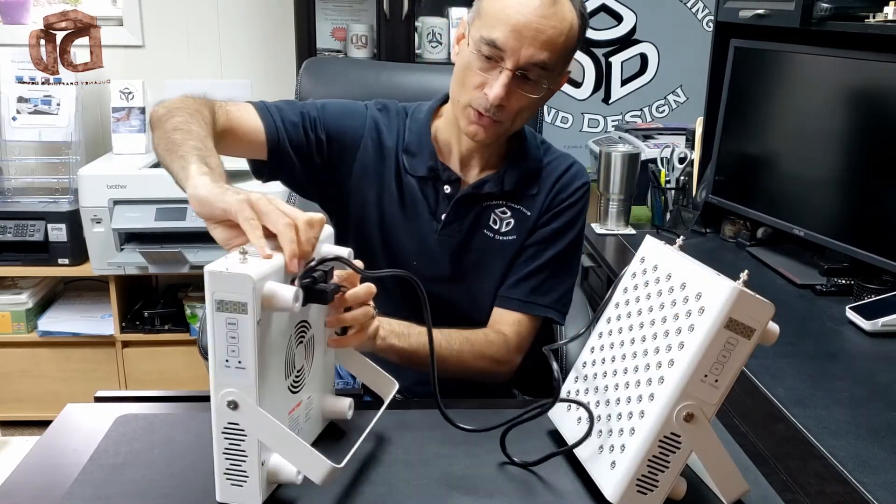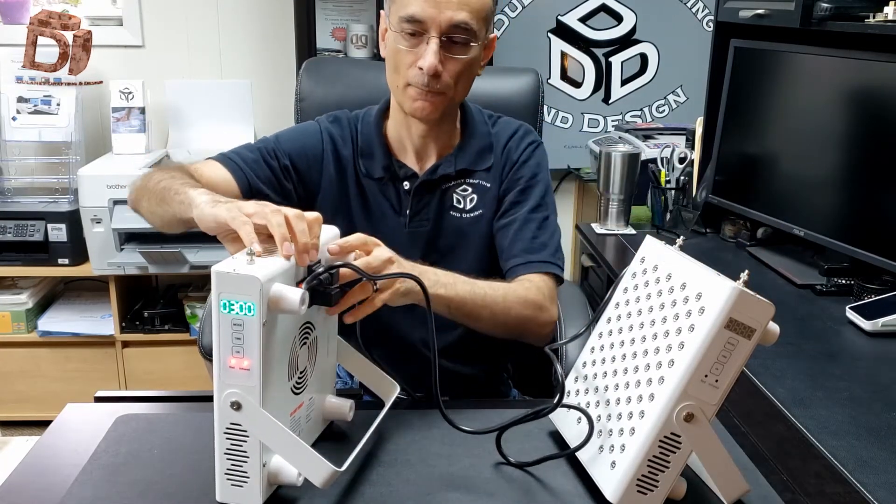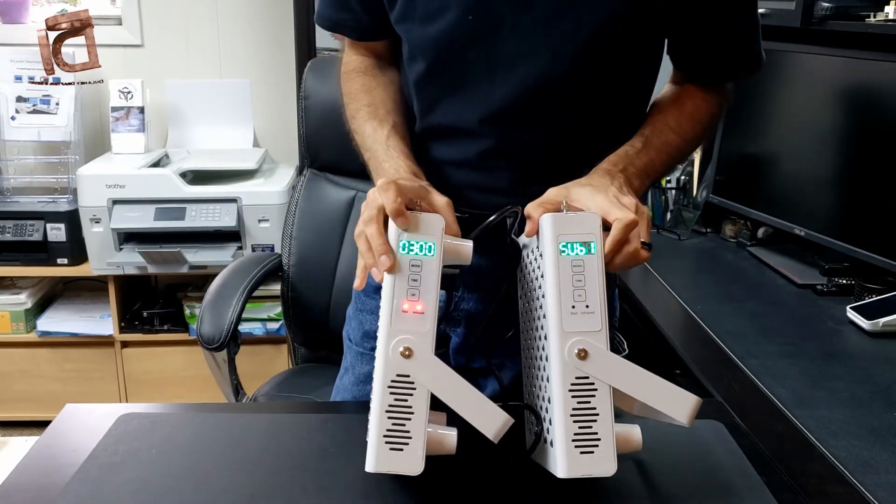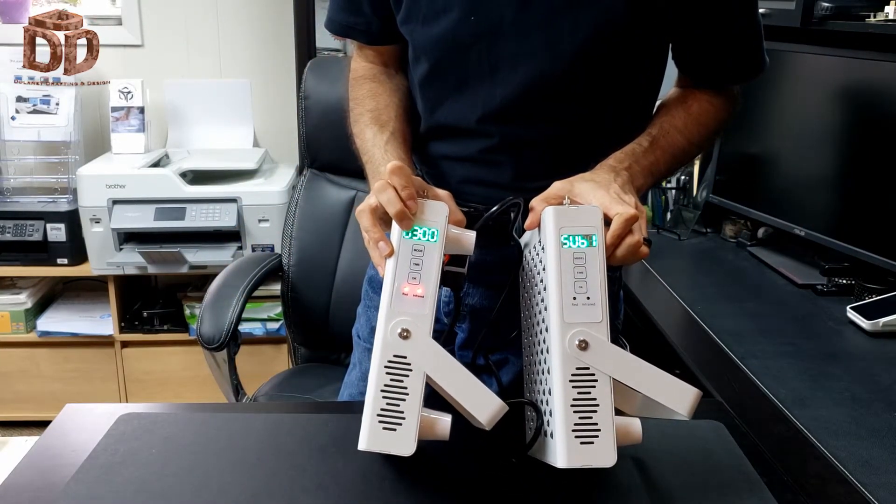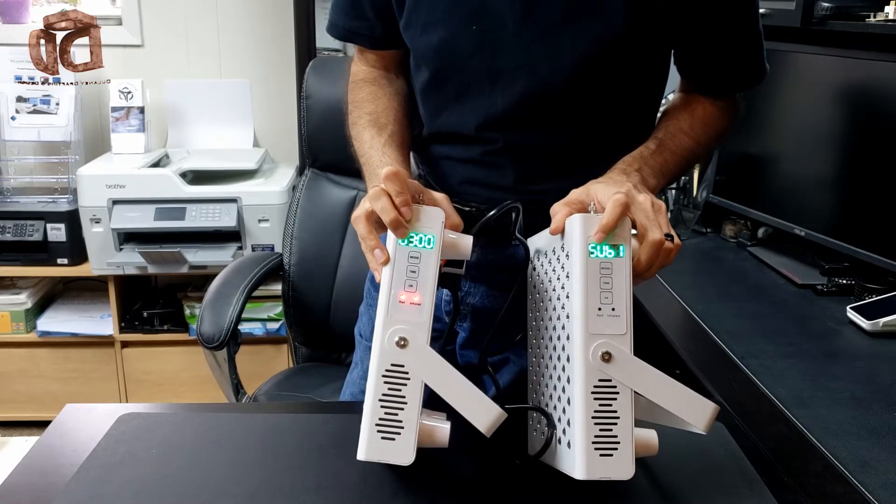So what I'm going to do now is simply turn both of the panels on and then you can see the main panel here has three minutes showing on the display and this one here is sub one.